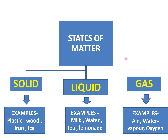States of matter are found in three forms. I have made a flow chart so that it is easier to learn. The three states of matter are solid, liquid and gas. Examples of solids are plastic, wood, iron, and ice. Examples of liquids are milk, water, tea, and lemonade. Examples of gases are air, water vapour, and oxygen. Learn the examples as they can come in exams - you could be asked to write examples of solid, liquid and gas.